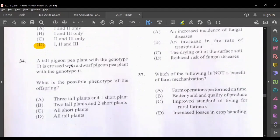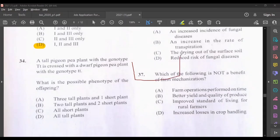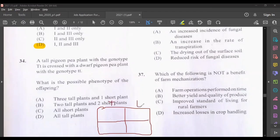A tall pigeon pea plant with a genotype TT is crossed with a dwarf pigeon plant with a genotype tt. What is the possible phenotype of the offspring? So if we have a small Punnett square, we can probably represent it. Let's draw it. So we can probably have a Punnett square here. One of the parents have a genotype of TT, and the other parent, a genotype of two lowercase t, recessive.